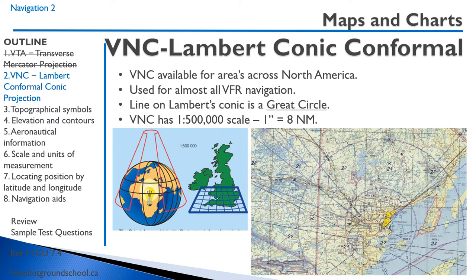The second type of projection is the Lambert Conic Conformal projection, used for Visual Navigation Charts (VNCs) — the most common chart you'll use as a pilot. It's used for almost all VFR navigation. It's formed by placing a cone on the earth, putting a light in the center, projecting the earth onto the cone, and then unwrapping it. A VNC has a scale of 1:500,000, so one inch equals eight nautical miles. Because it uses a cone, all lines of longitude eventually converge on one point.